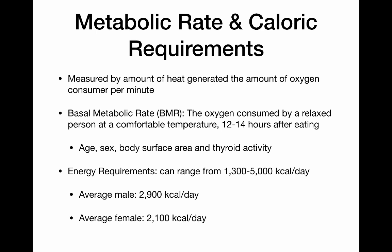The thyroid gland is the endocrine gland that basically sets and maintains our basal metabolic rate. The energy requirement for a human has a pretty broad range — anywhere between 1,300 and 5,000 kilocalories per day. The average male requires about 2,900 kilocalories per day, and the average female requirement is about 2,100 kilocalories per day. Of course, that would be adjusted based on physical activity, thyroid activity, the size of the person, and all of those sorts of things.